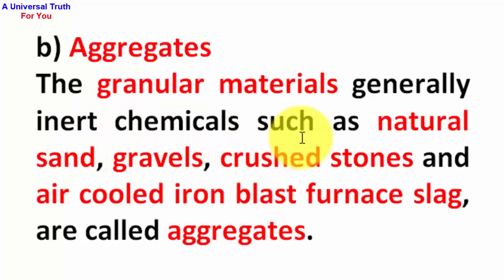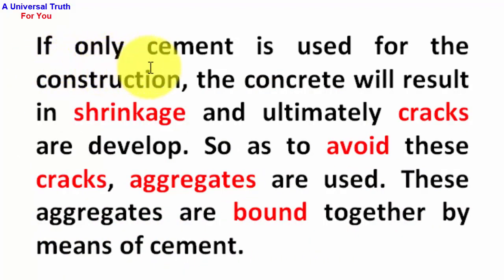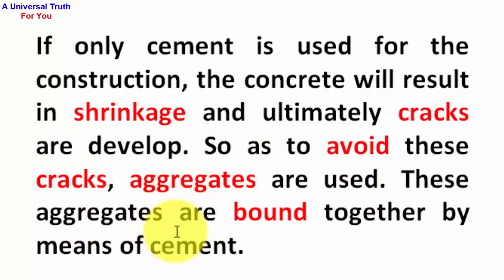B) Aggregates: The granular materials — generally inert chemicals such as natural sand, gravels, crushed stones, and air-cooled iron blast furnace slag — are called aggregates. If only cement is used for construction, the concrete will result in shrinkage and ultimately cracks will develop. To avoid these cracks, aggregates are used, and they are bound together by means of cement.